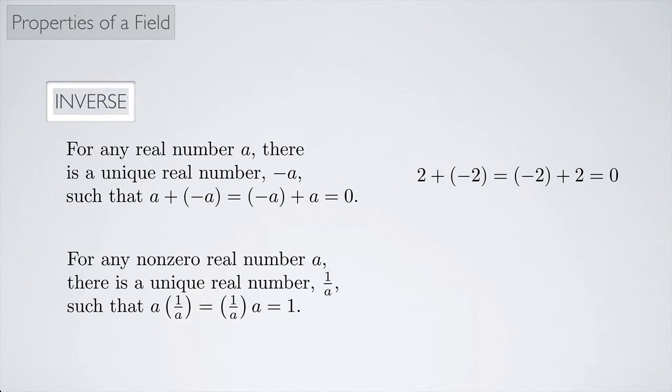Same idea for multiplication, except remember we can't divide by 0. So we have to say for any non-zero real number A, there is a unique real number, 1 over A, such that when we multiply them together, we get back the multiplicative identity, which remember was 1. So 3 times a third, that gives you back 1.